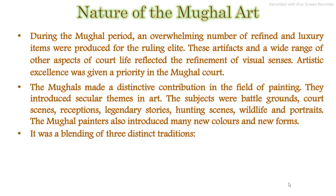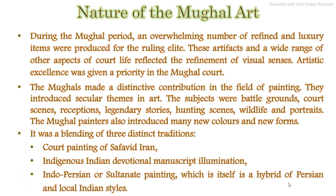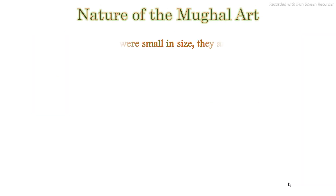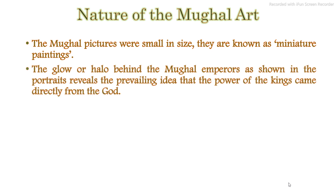It was a blending of three distinct traditions: court painting of Safavid Iran, indigenous Indian devotional manuscript illumination, and Indo-Persian or Sultanate painting, which is itself a hybrid of Persian and local Indian styles. The Mughal pictures were small in size and they are therefore known as miniature paintings. The halo behind the Mughal emperors as shown in the portraits reveals the prevailing idea that the power of the kings came directly from God.